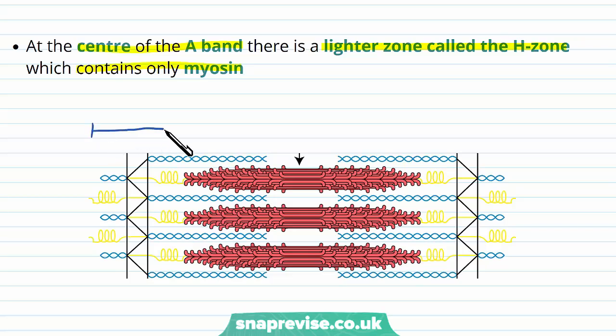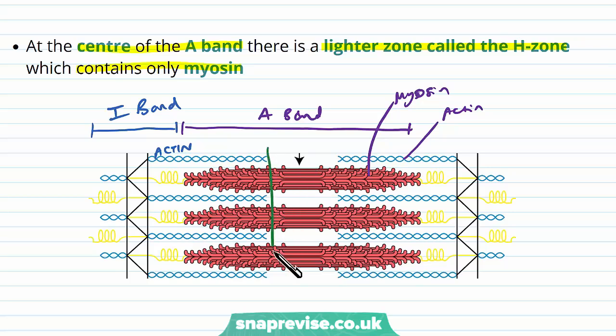So just to recap again, we've got the I band, which is very light because there's only actin. And then we have the darker band, which is called the A band, which has mixtures of myosin and actin. But then when you look in the middle of the A band, running down here, we have only myosin. So this is called the H zone.